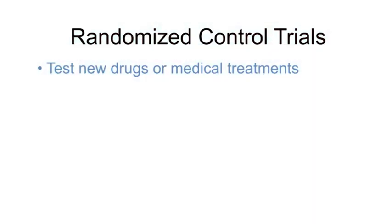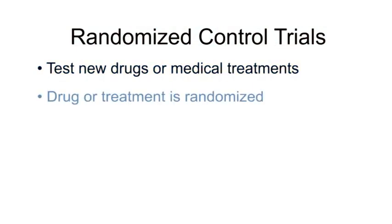Randomized control trials are often used to test new drugs or medical treatments. The key feature is that the drug or medical treatment is randomized. Another example of a randomized control trial would be a study comparing two different treatments for asthma, where subjects would be randomized to one of the two asthma treatments.